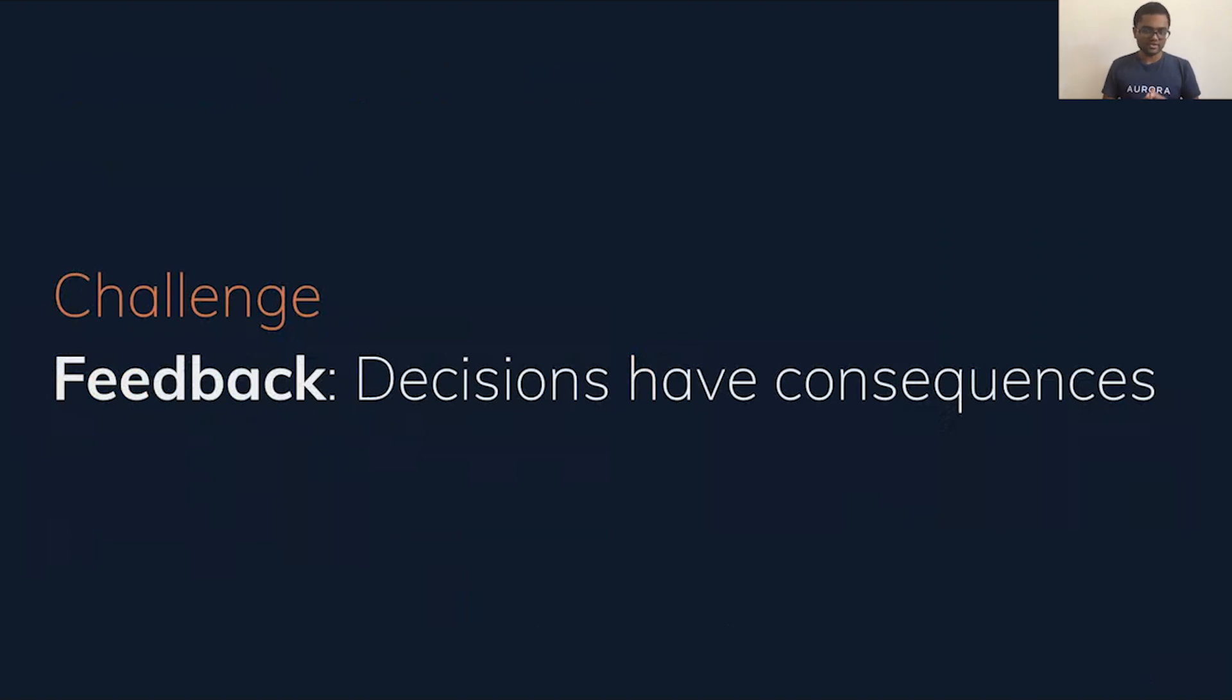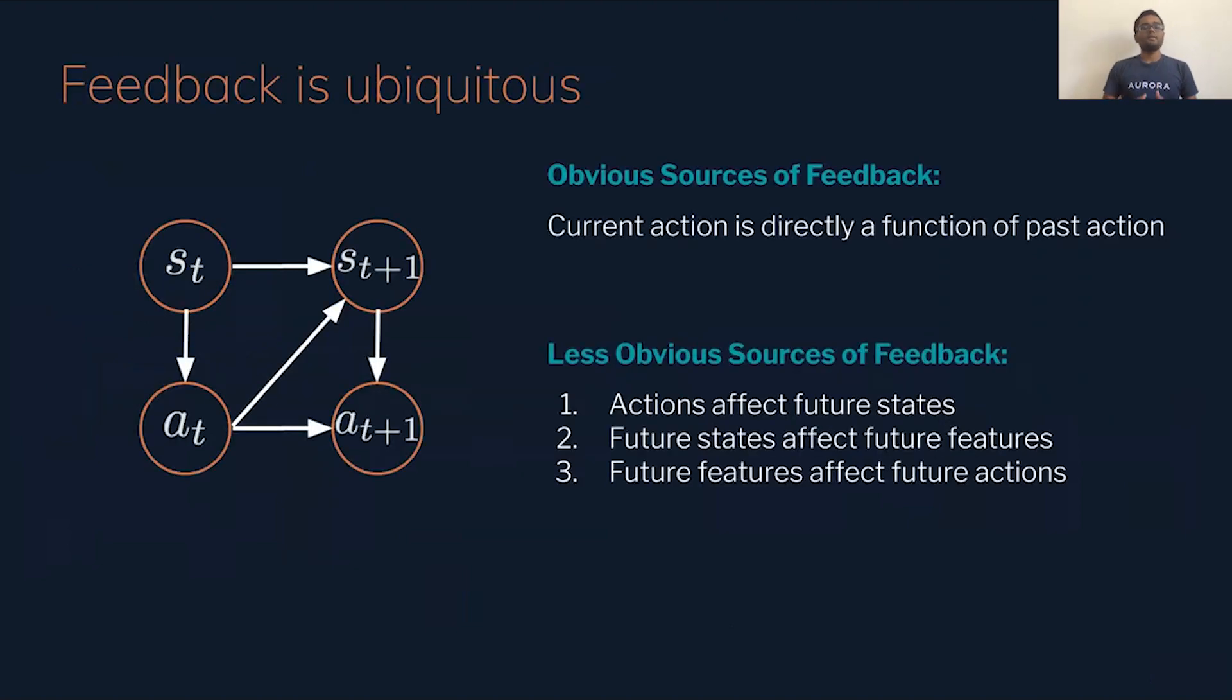But when we're doing something like imitation learning or any sort of sequential decision making problem, so this could be in natural language processing, this could be in robotics. These actions have consequences. They change how we should respond in the future, but also change the state of the world. And this feedback is ubiquitous in our problem. There's obvious sources of feedback where the current action is directly a function of past. If I'm learning to do a forehand, I don't want to switch to a backhand in the middle. Or if I'm in a self-driving car and there's an internal combustion engine, it takes time for the compression to happen and for the energy to be released. I want to make sure that the current actions are directly a function of the past actions sometimes. I want that hysteresis in my system.